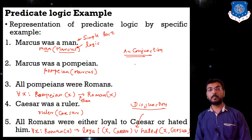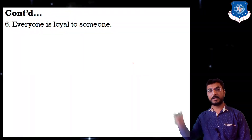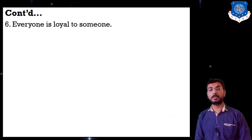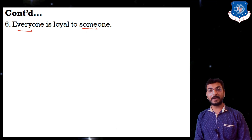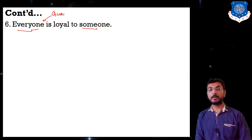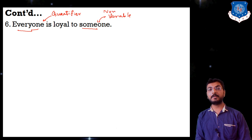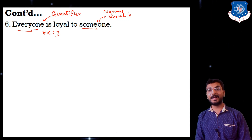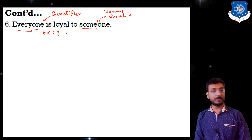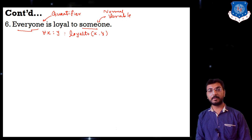Next, statement six: 'Everyone is loyal to someone.' Here 'everyone' uses a universal quantifier and 'someone' uses a variable. So we write: for all X and Y, loyal_to(X, Y). That means everyone is loyal to someone — X represents everyone and Y represents someone.